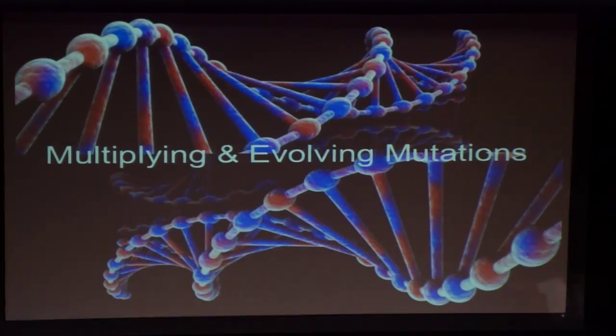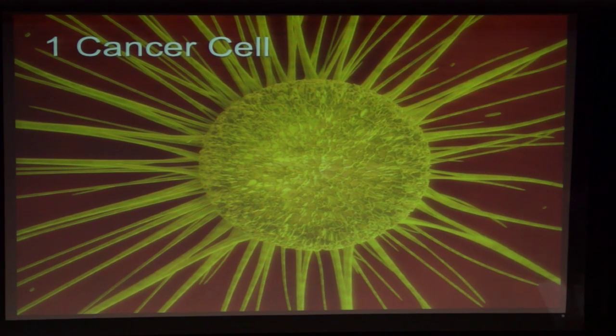Sometimes a single mutation in a single one of your cells can give that cell a competitive advantage over its normal team. It becomes a non-team player, and its only modus is to survive. When this happens, in some circumstances, this mutation effect multiplies and evolves, keeping multiplying and evolving and conferring more survival attributes to that cell. So we're talking about a single cell in your body — in this case, it becomes a single cancer cell.